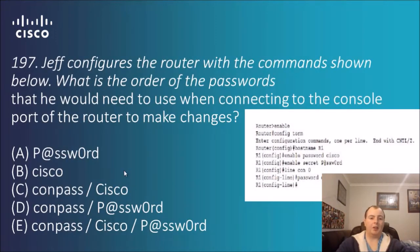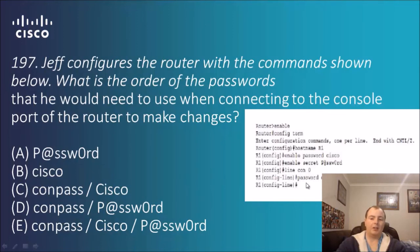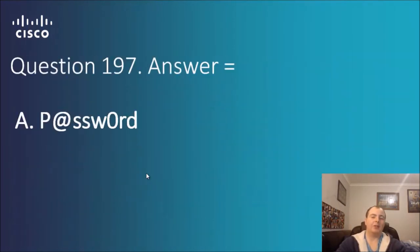Question 197: Jeff configures the router with the commands shown. What is the order of the passwords he would need when connecting to the console port to make changes? The configuration has: enable password Cisco, enable secret password, line con with password con pass. However, there is no login command, which would actually make the authentication applicable. So even though con pass is set, because login has not been configured, it'll just be A — 'password' — similar to the previous question.